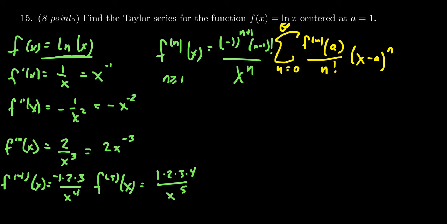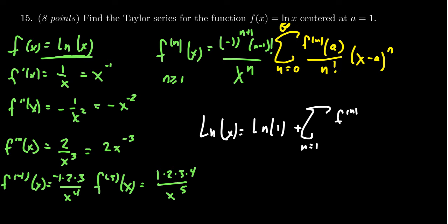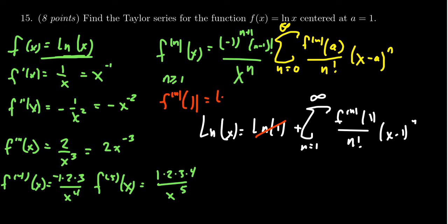For the Taylor series of the natural log of x, the first term is the natural log of one, and then we add the sum starting at n equals one — separating the zeroth term since it doesn't match the pattern. After the first derivative it follows a nice pattern. Plugging in the formula, the nth derivative evaluated at one divided by n factorial times x minus one to the n, summed to infinity. The natural log of one is zero so that term disappears. Evaluating the nth derivative at one gives negative one to the n plus one times n minus one factorial, and one to the n is just one.